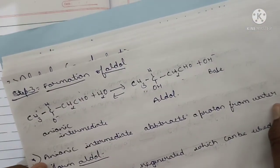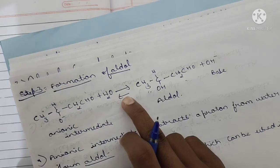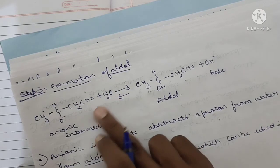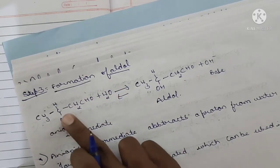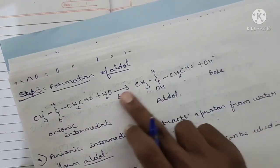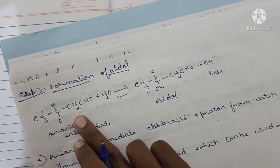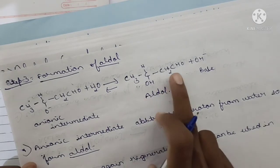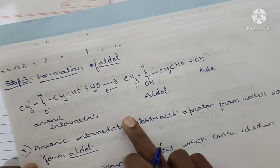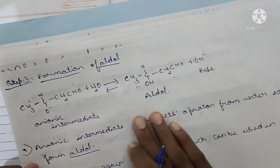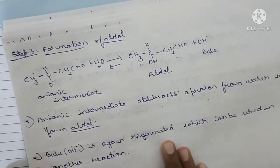Step three: formation of aldol, the final step. After the formation of the anionic intermediate, a water molecule is added. The O⁻ with negative charge receives a proton H⁺ from the water molecule. This gives CH3CH(OH)CH2CHO — the aldol product. The OH⁻ is liberated as the base is removed. Aldol formed is 3-hydroxybutanal, also written as beta-hydroxybutyraldehyde, which is 2-hydroxybutaldehyde — the final product.